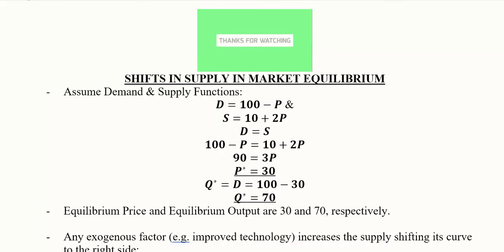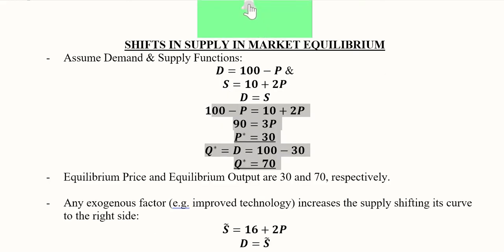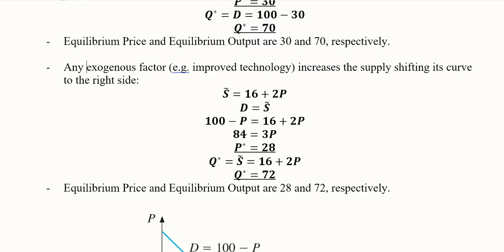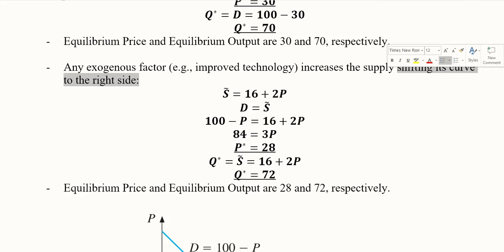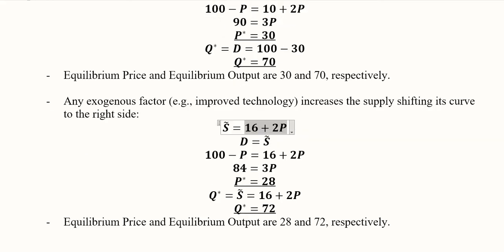We now consider the shift in the supply curve. The original demand and supply curves are the same as before, and the initial equilibrium is recalled. The focus here is on an exogenous factor that increases supply — improved technology is that reason. Technology upgradation increases supply and shifts the supply curve to the right. The new supply function changes from 10 plus 2p to 16 plus 2p, meaning the intercept has increased from 10 to 16.